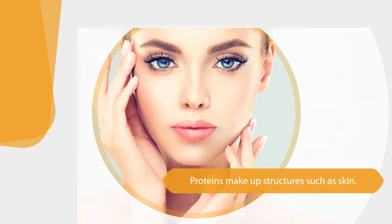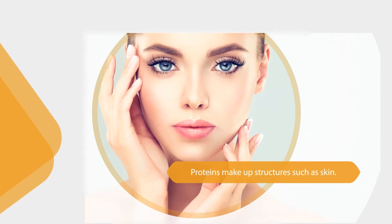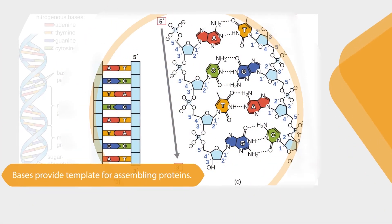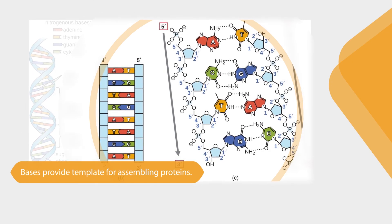Some proteins in the body make up structures such as skin, others are hormones or enzymes that control cell activities. A major function of DNA is to provide the instructions for making proteins. DNA is made of molecules called bases, whose arrangement provides the template for assembling proteins.